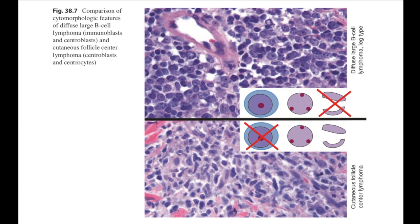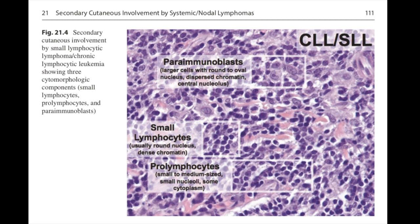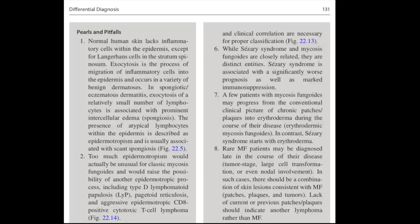Here are some other figures showing the difference between diffuse large B cell lymphoma versus cutaneous follicle center lymphoma, with diagrams highlighting the cytomorphology of the lymphocytes in those two diseases to help with memory. Here's CLL/SLL involving the skin, showing that it's composed of not only small lymphocytes but also prolymphocytes and paraimmunoblasts — words I found very confusing as a trainee and still find confusing sometimes. The book really goes into detail explaining what these words mean and what the cells look like. It takes a master teacher to break down these things into simple parts that are easily understood and conceptualized.